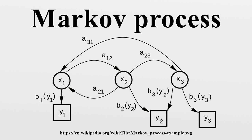A birth-death process: suppose that you are popping 100 kernels of popcorn, and each kernel will pop at an independent, exponentially distributed time. Let the process denote the number of kernels which have popped up to time t. Then this is a continuous time Markov process. If after some amount of time, I want to guess how many kernels will pop in the next second, I need only to know how many kernels have popped so far. It will not help me to know when they popped, so knowing previous times t will not inform my guess. The process described here is an approximation of a Poisson process. Poisson processes are also Markov processes.